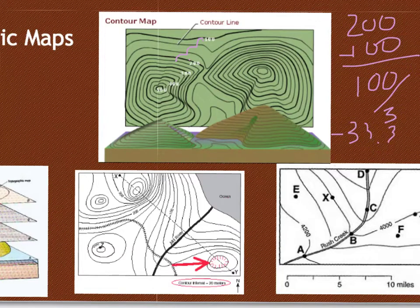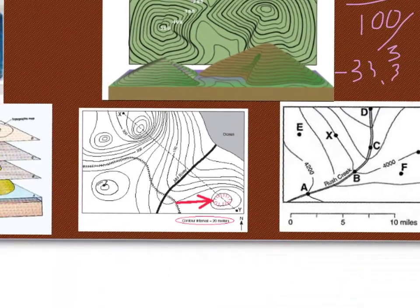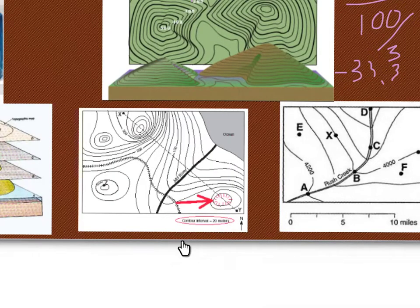They're not all going to be like that. Normally they're nice, round, even numbers like down here. This one actually tells you, always look for that first, this one tells you what the contour interval is. So this one goes up by 20 meters, so each line is worth 20 meters.